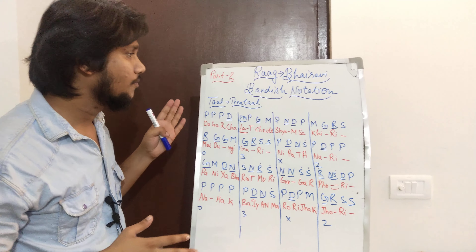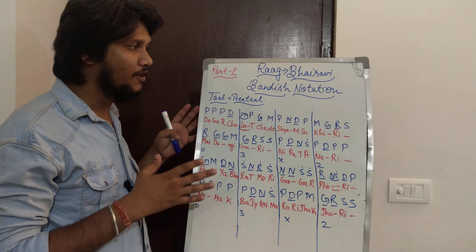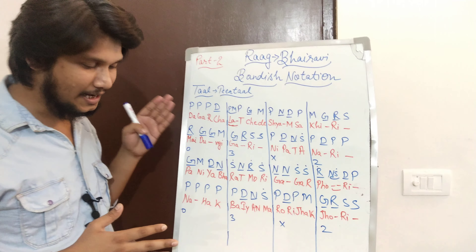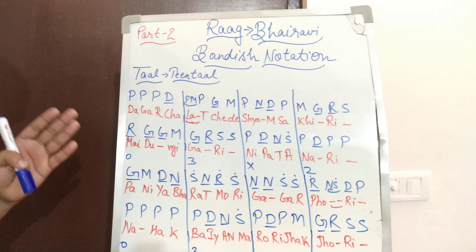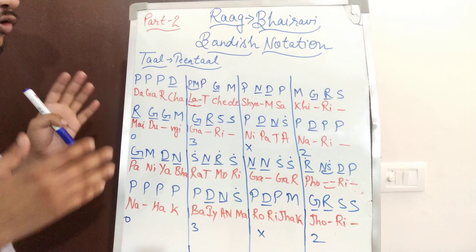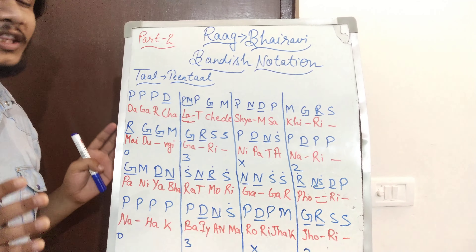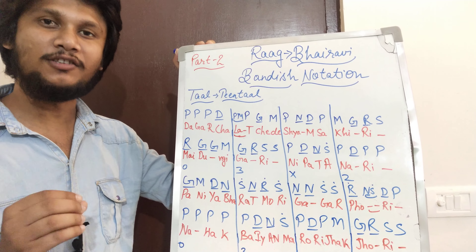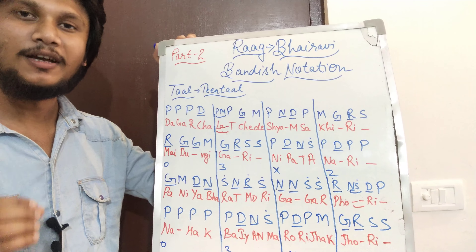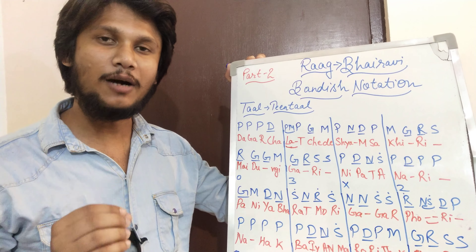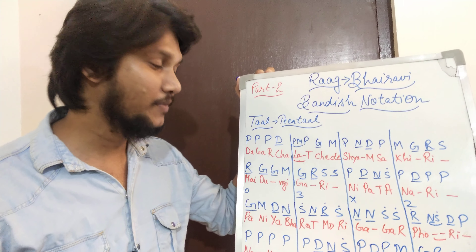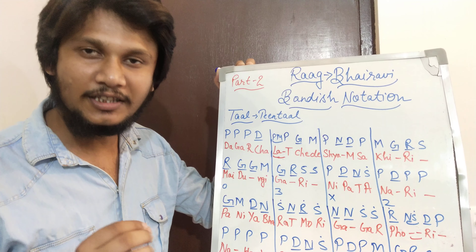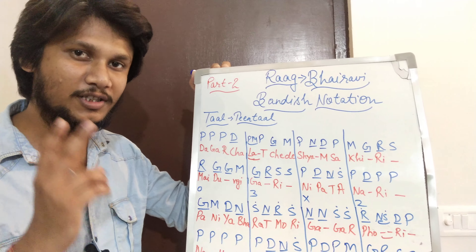The Bandish is in Teen Taal. First of all, I will tell you about the Bandish. It is in Teen Taal. Two lines in the starting and two lines are in Antra, or we can call it Stenja. The main words of the Bandish are: Dagar Chalat Chede Shyaam Sakheeri, May Dungi Gaari, Nipat Anadi. These are the two lines from the starting, that is called Sthai.